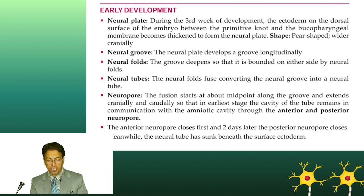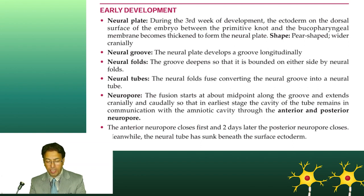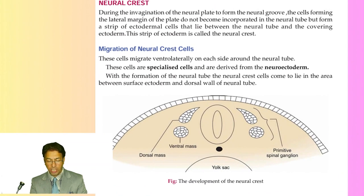The neural tube has a cranial end and a caudal end. We have two neural pores — the anterior neural pore and the posterior neural pore — which fuse or close. Abnormality of their closure can lead to various developmental defects which we will be discussing elsewhere.